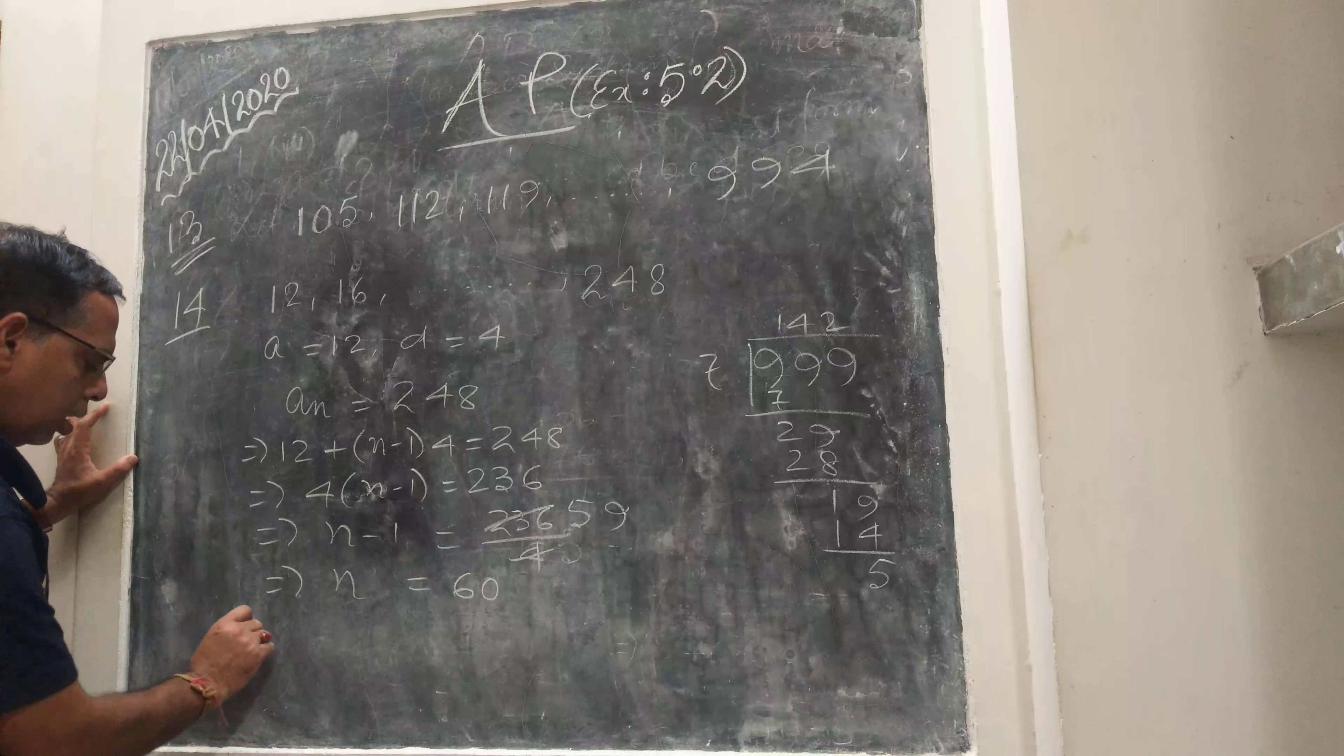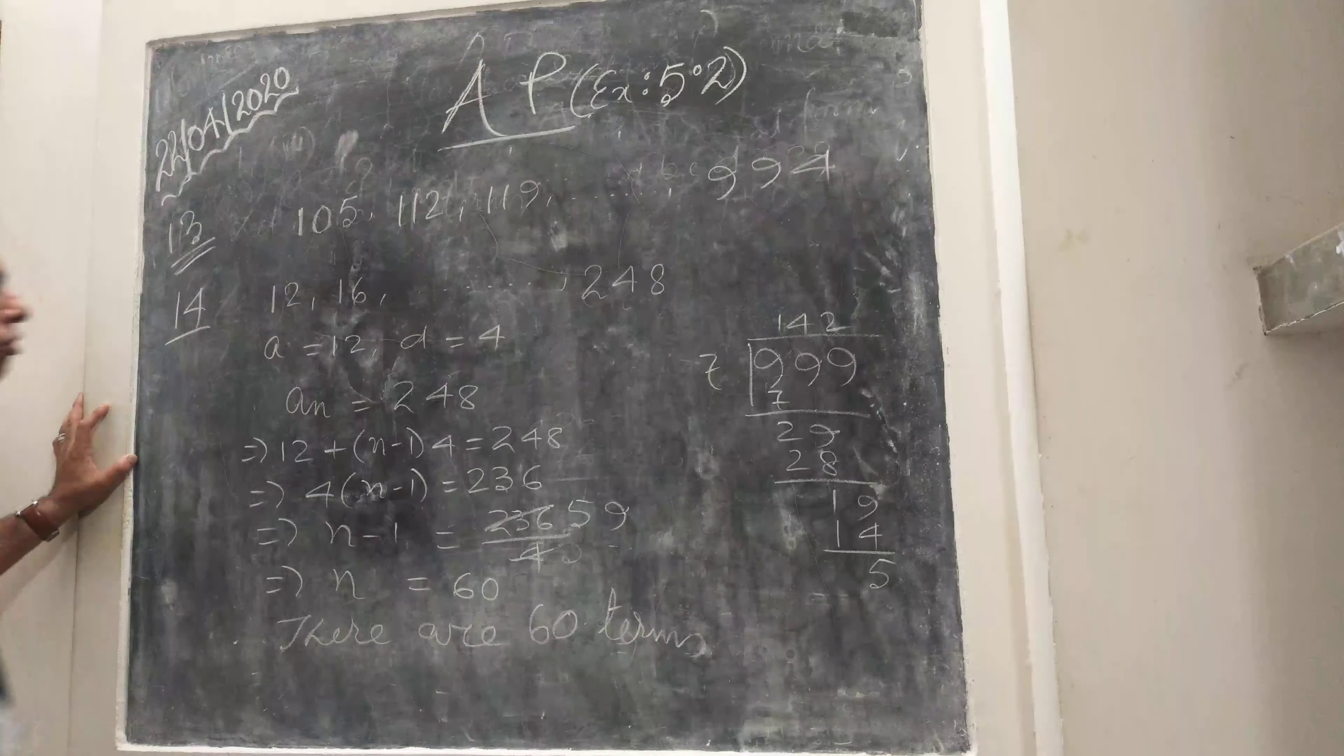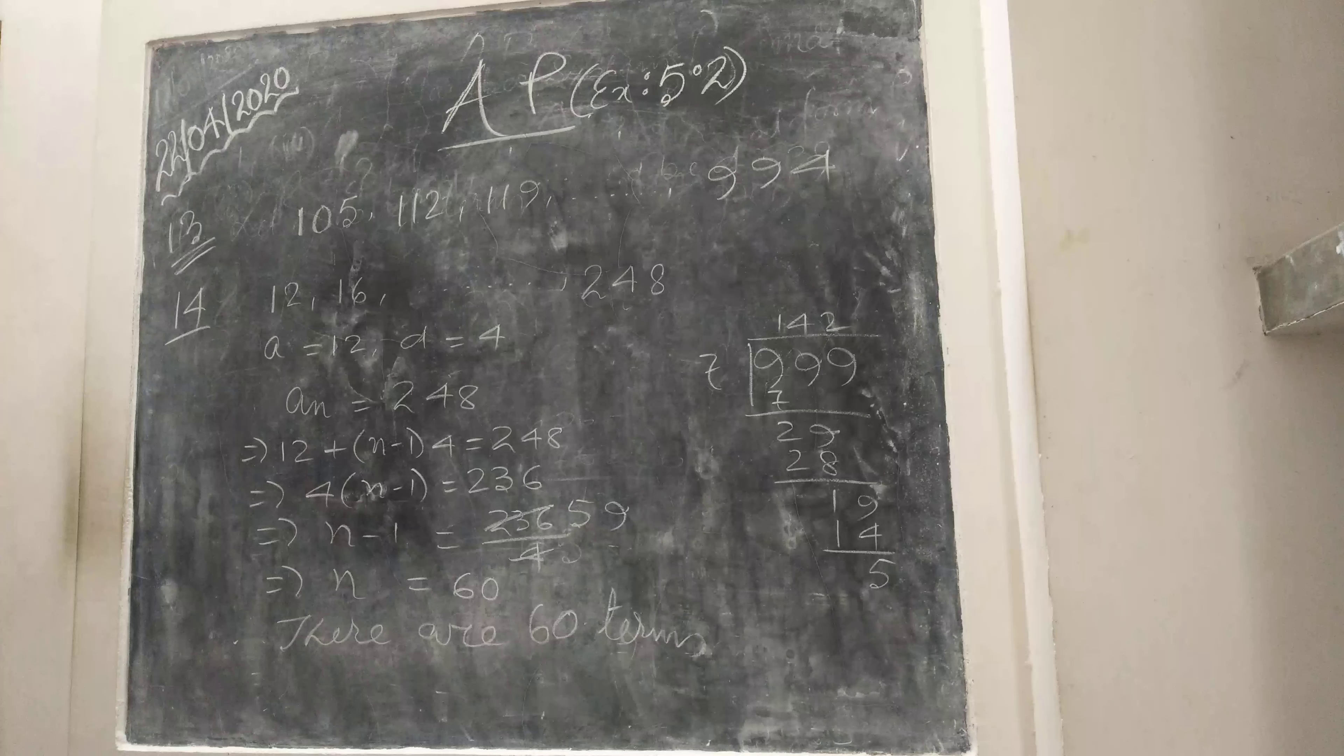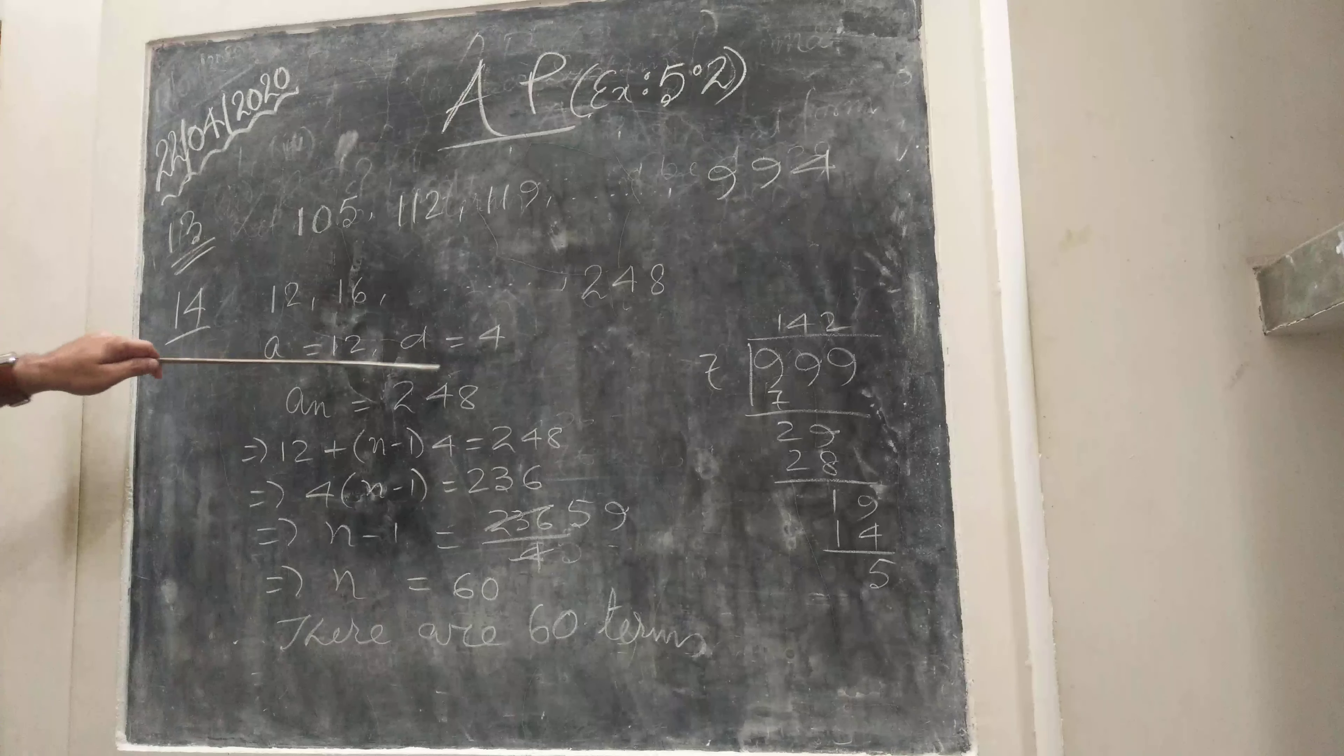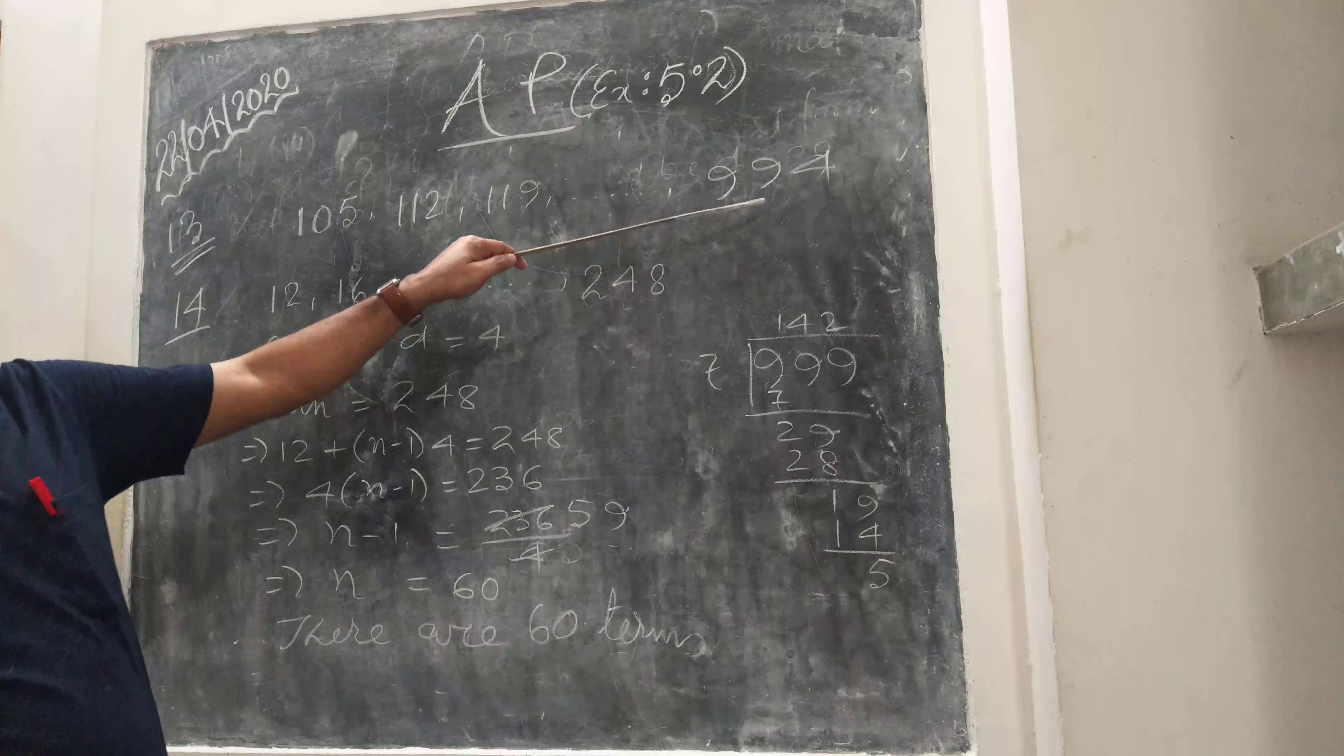Therefore there are 60 terms, 60 multiples of 4. Same one you can do for this. Whatever you get here, same here. Then D is 4, multiple of 4. For the other it will be 7, multiple of 7.